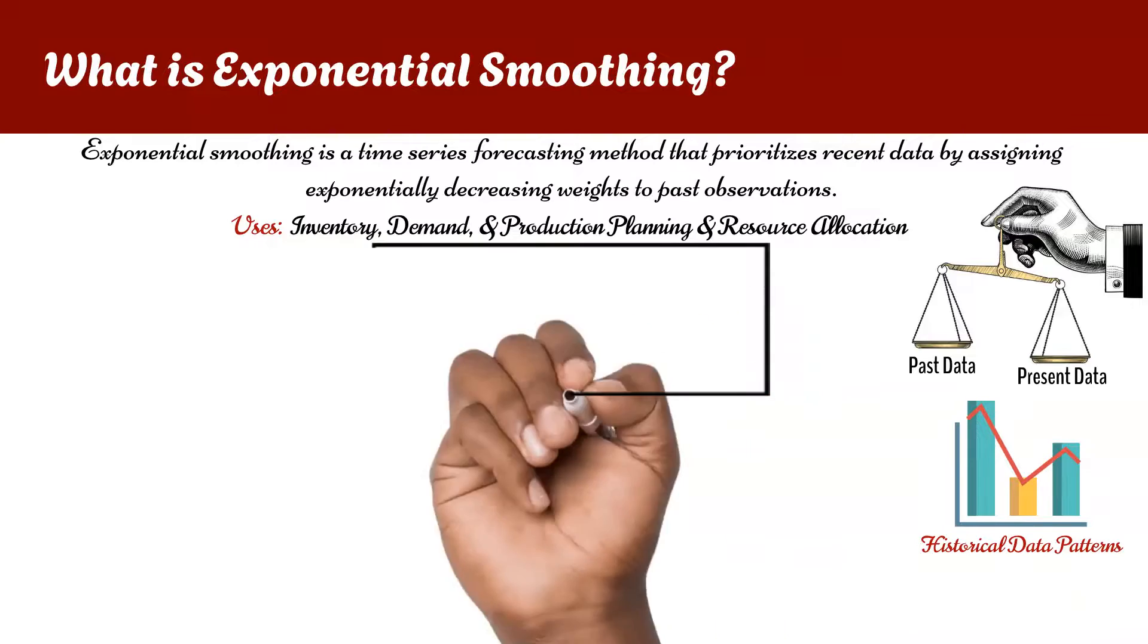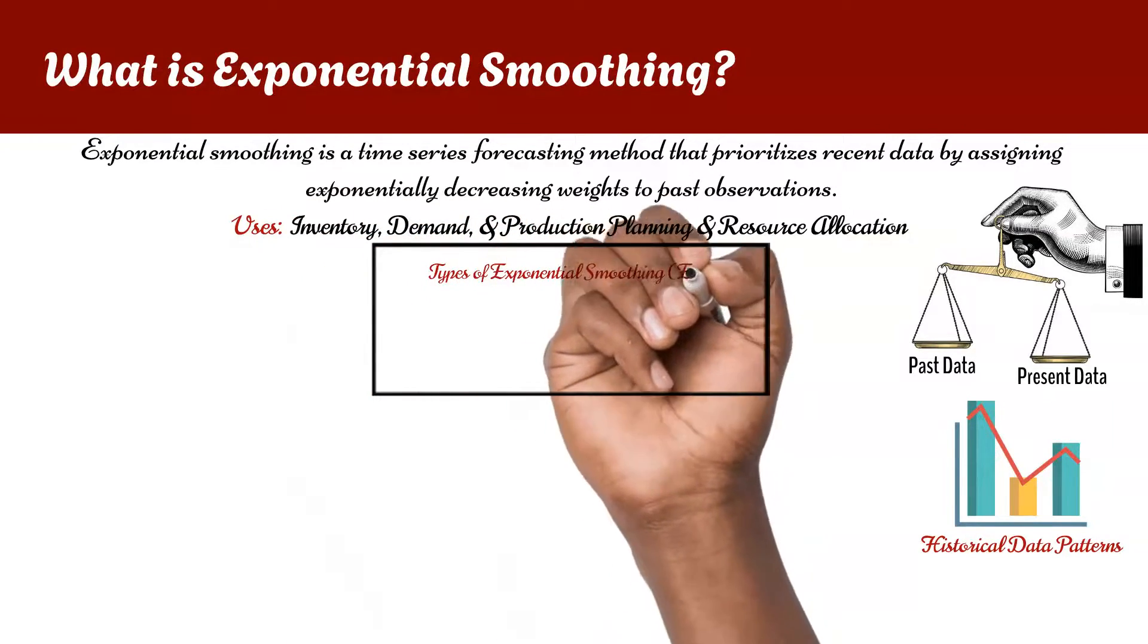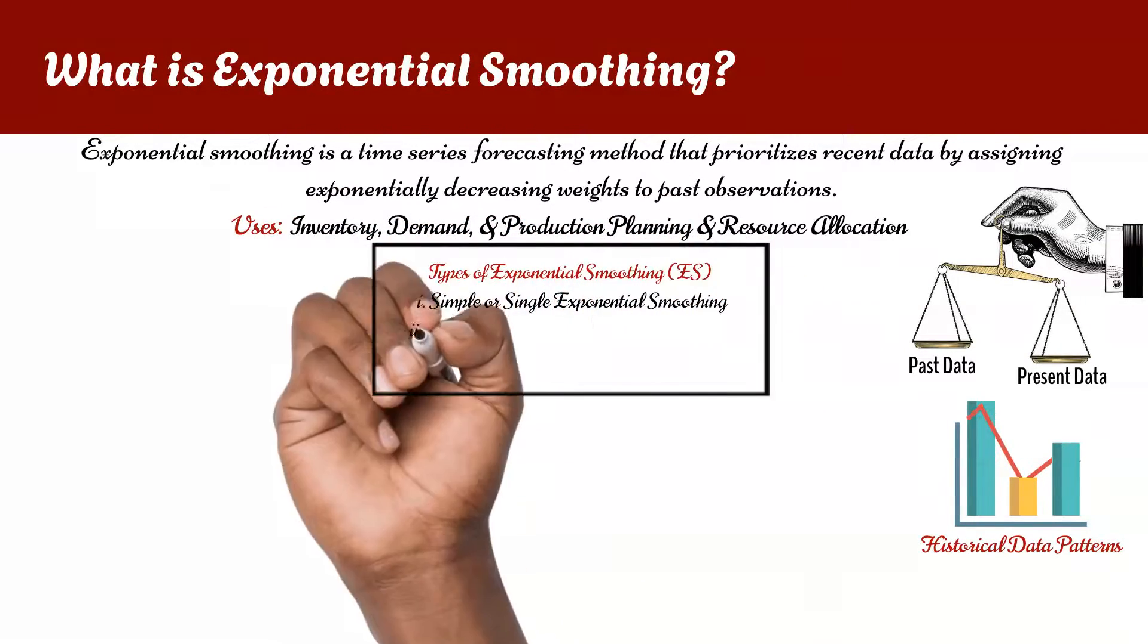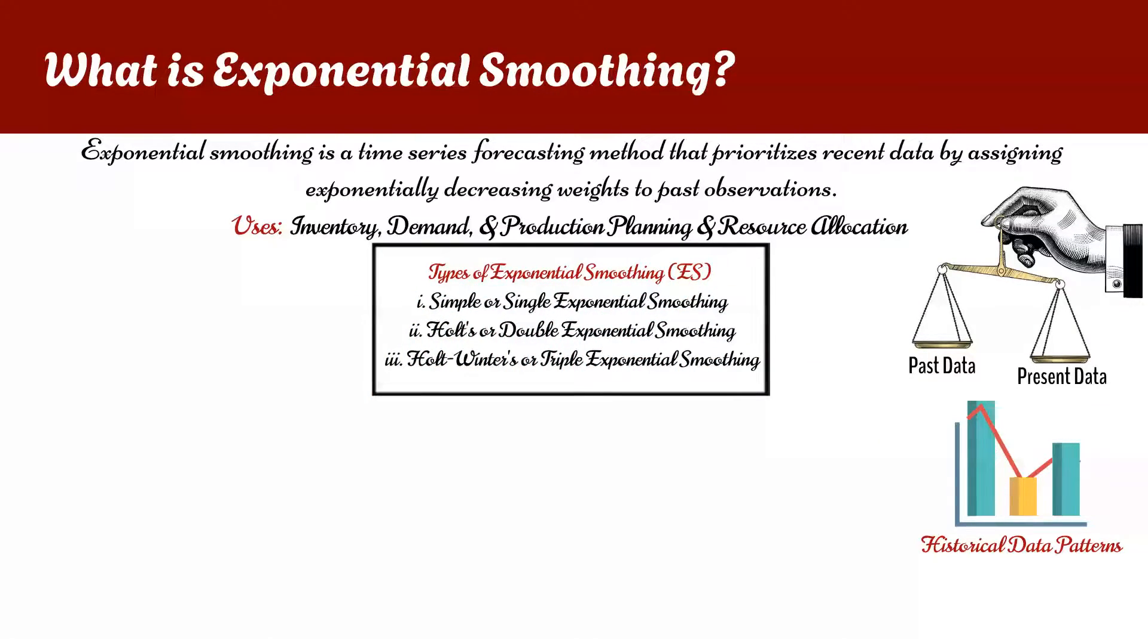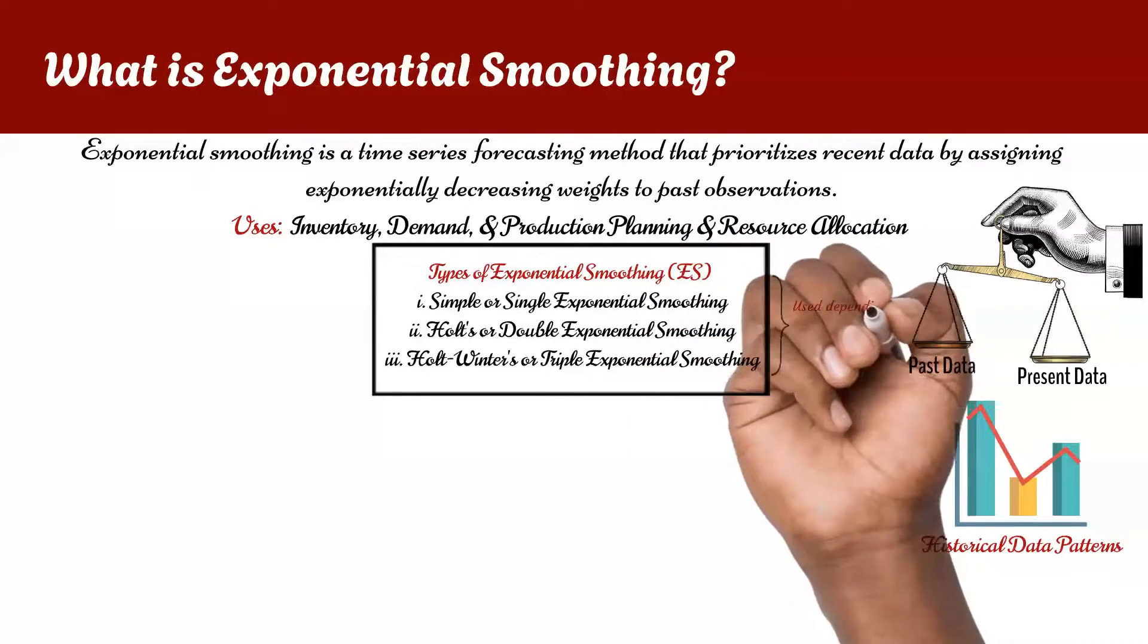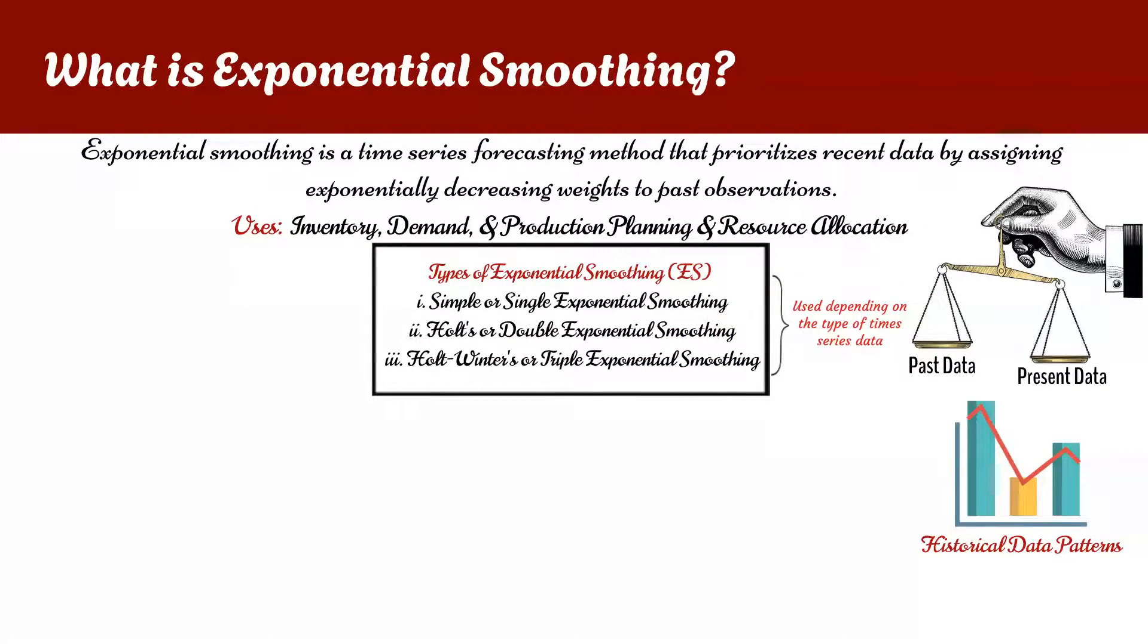There are different variants of exponential smoothing, such as simple exponential smoothing, double exponential smoothing also known as the Holtz method, and the triple exponential smoothing also known as the Holtz-Winters method. Each of these exponential smoothing techniques cater to specific characteristics of the time series data.